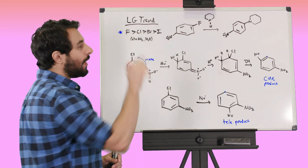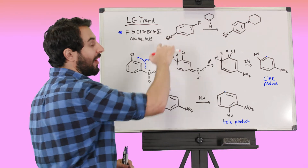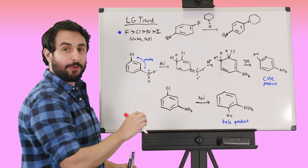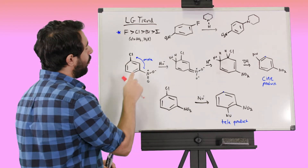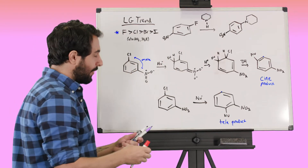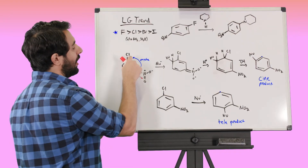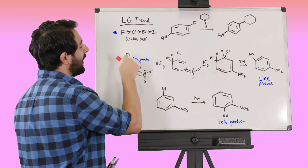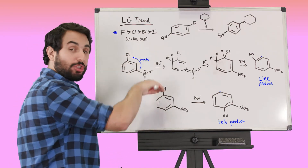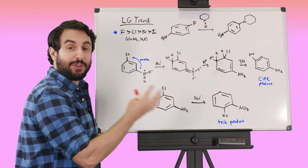Now let's talk about regiochemistry. When the electron-withdrawing group is ortho or para to the leaving group, resonance stabilization of the intermediate works well. But when the electron-withdrawing group — like a nitro group — is meta to the leaving group, things are different. Even though that carbon may be the most partially positive, the resonance can't reach the nitro group to stabilize the intermediate.